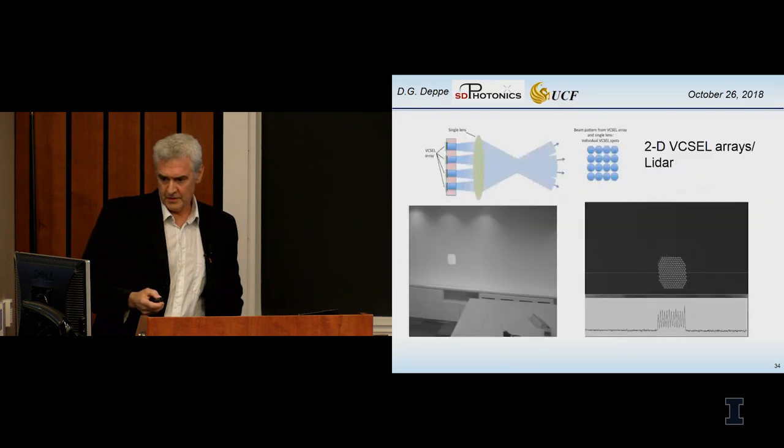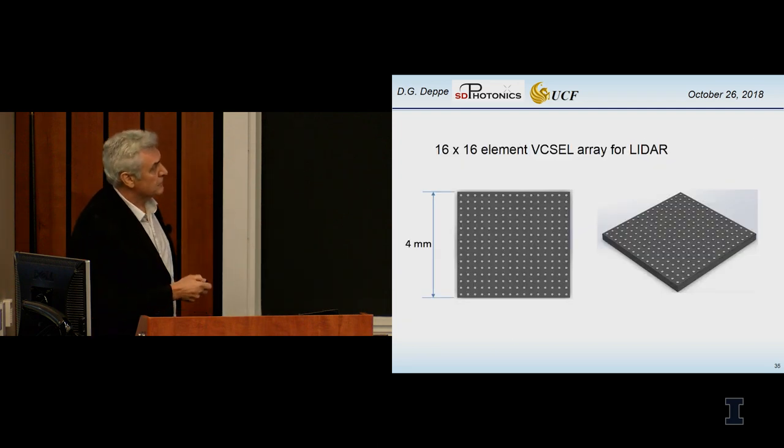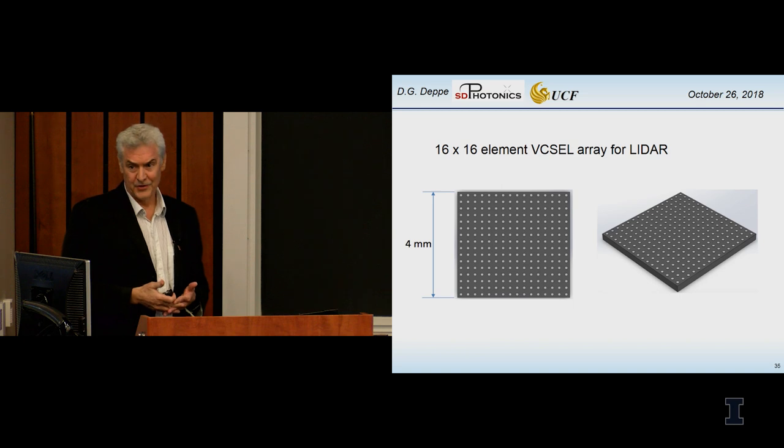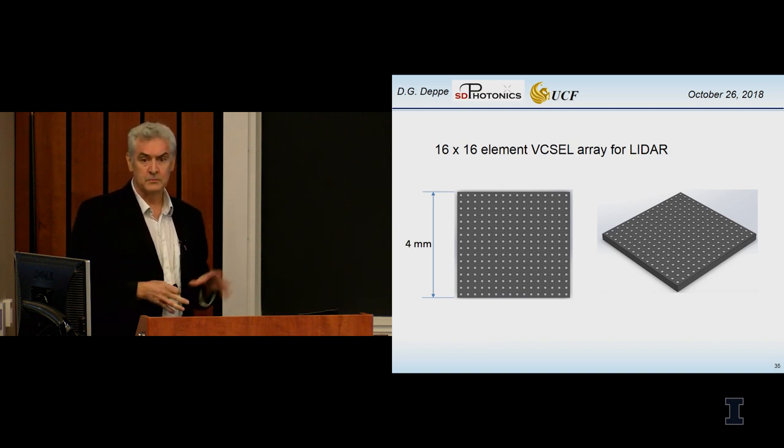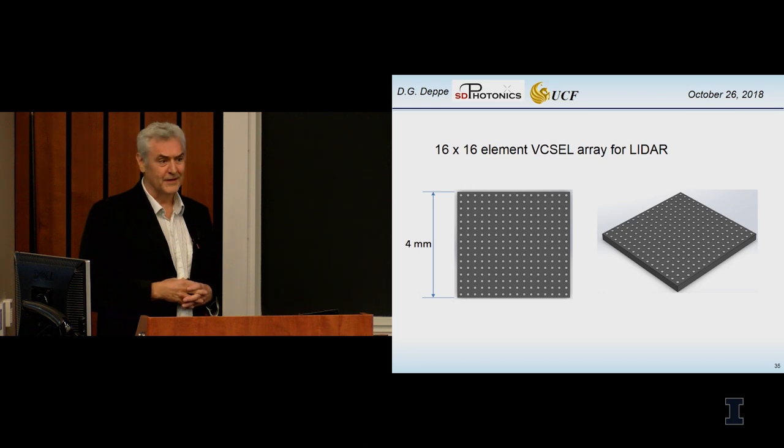This is 256 VCSELs, and the resolution is limited by the number of lasers that you have in these LIDAR systems. You can see this is 256 lasers on a very small chip versus 64 lasers in one of these big rotating systems, and the 256 lasers have electronic scanning. So big advantage. It's not clear how this is going to turn out in terms of self-driving, but this is one of the candidates. That's my last slide. Thank you.